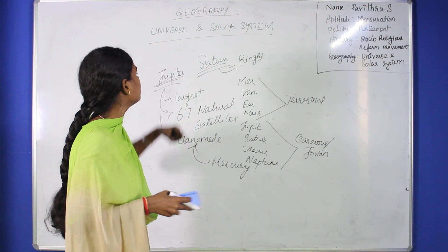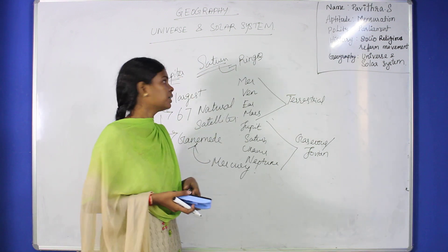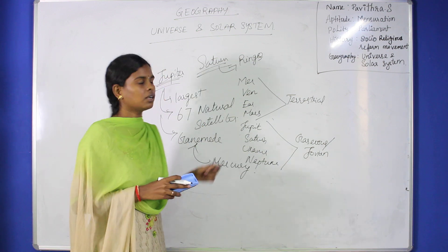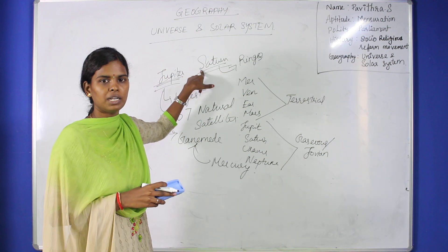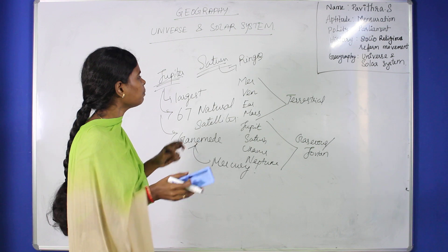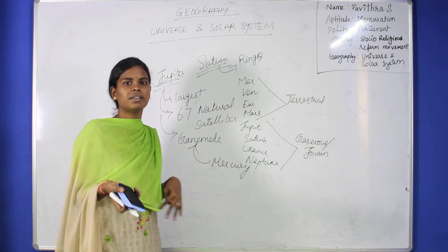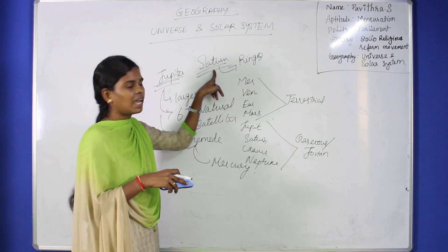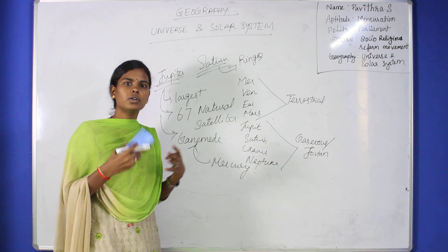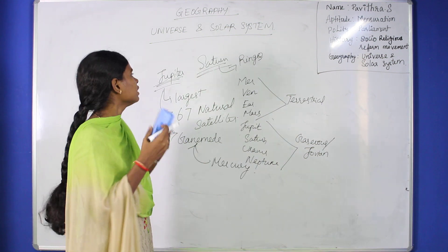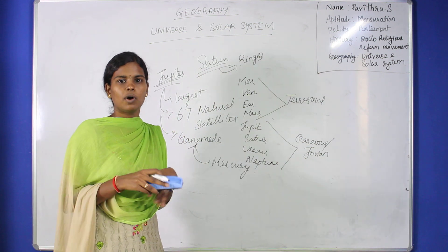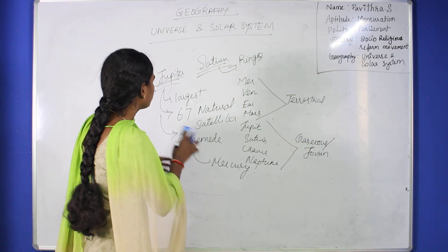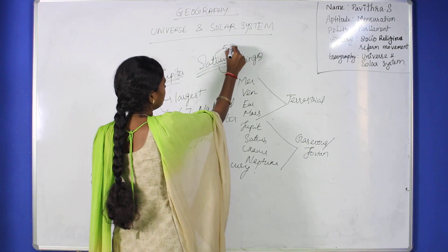Saturn has a unique feature. Saturn's density is so low that Saturn would float in water. Saturn has 53 satellites.